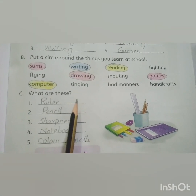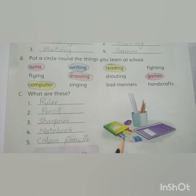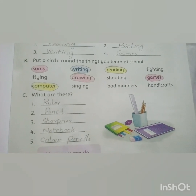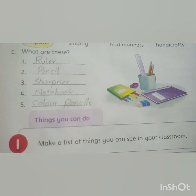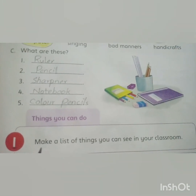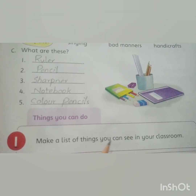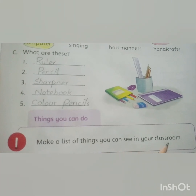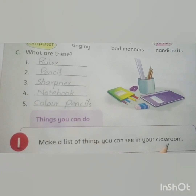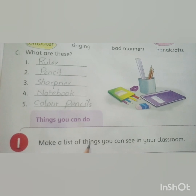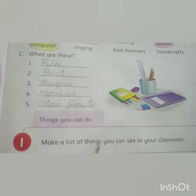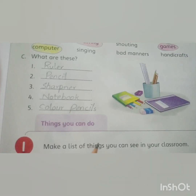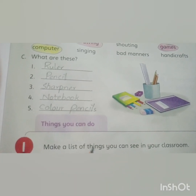You people write the names of these things shown in the pictures. Activity: make a list of things you can see in your classroom. Classroom میں آپ کو جو چیزیں دکھائی دیتی ہیں آپ لوگوں نے اس کا ایک لسٹ بنانا ہے اور name لکھنی ہے آپ نے activity note book میں۔